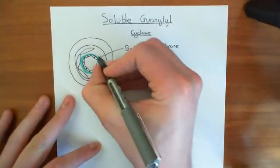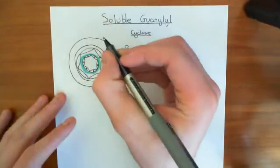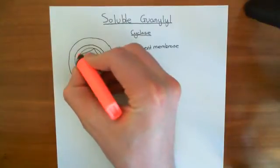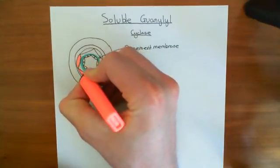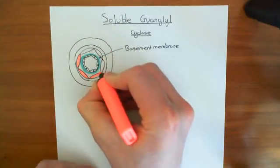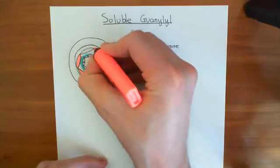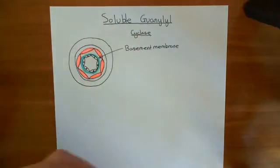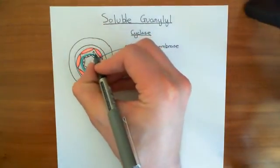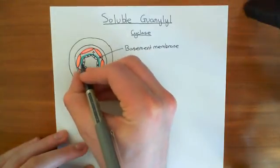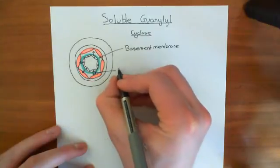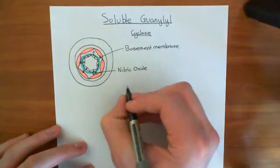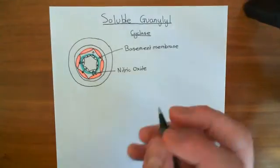When you stimulate the endothelium with certain chemical stimuli such as acetylcholine, you can stimulate the endothelium to start producing nitric oxide. The endothelium activates its calcium-dependent nitric oxide synthase enzyme — the NOS enzyme, or the endothelial NOS, eNOS. These endothelial cells are going to start producing nitric oxide, which diffuses to the smooth muscle cells that are peripheral to the endothelial cells in this blood vessel structure.